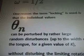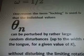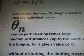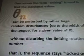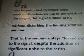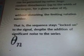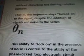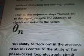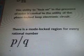One reason the term locking — I'm not sure if that's 1 half or 1 divided by 2 — is used is that the individual values can be perturbed by rather large random disturbances up to the width of the tongue for a given value of K, without disturbing the rotation number. That is, the sequence stays locked on to the signal despite the addition of significant noise to the series. It's this ability to lock on in the presence of noise that is essential to the utility of the phase-locked loop electronic circuit.